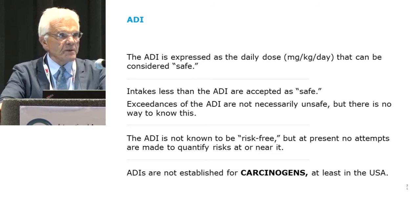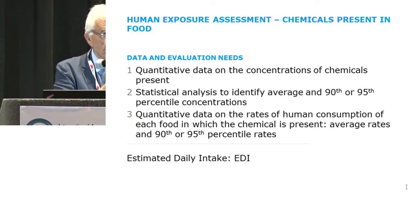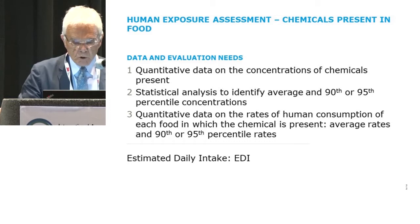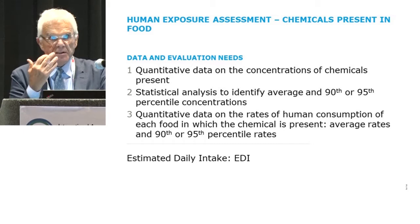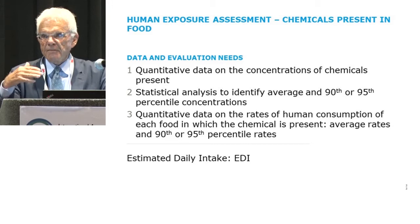Human exposure assessment is the next step. This could easily take 30 slides — it's a terrific topic with lots of people working on improving our understanding of human exposures through food, which is particularly difficult. Water we have pinned down, but food is a lot more complicated because intake levels vary much more greatly. We try to come up with something called an estimated daily intake, and our criterion for safety is simply that the estimated daily intake accounts for duration of exposure and duration of intake.